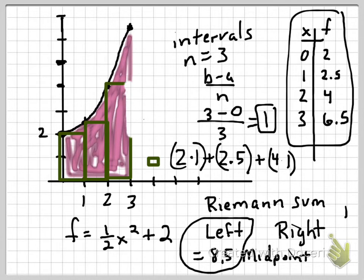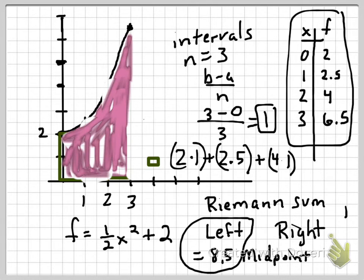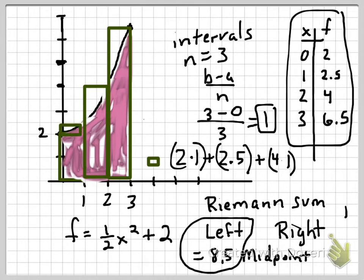If we're going to do a right Riemann sum, I'm going to just clear these little rectangles off here. A right Riemann sum, everything is the same, the widths of the rectangles are the same. The difference is you start with the right end point to make your rectangle. So this is obviously going to be an overestimate.